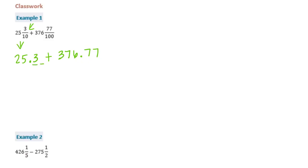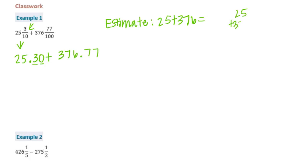Think back to 5th grade and bring those memories back. I'm going to put a zero here to make this in the hundredths place since this one's also in the hundredths place. Now let's estimate. So my estimate would be about 25 plus 376, and that would be equal to — 5 plus 6 is 11, carry the 1, 1 plus 2 is 3 plus 7 is 10 — so my estimate is about 401.